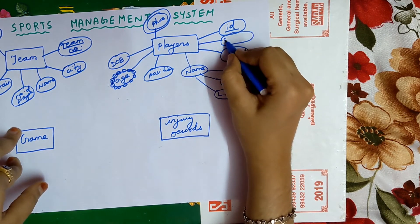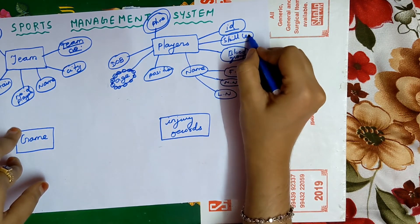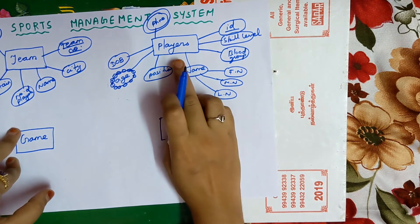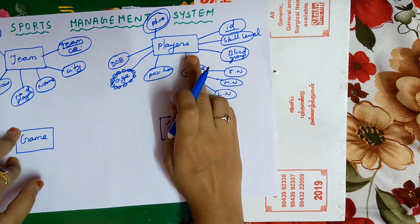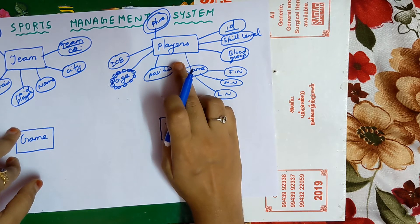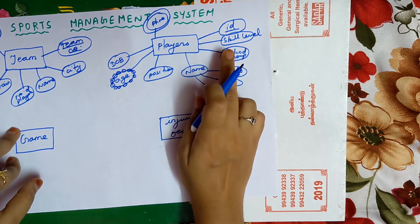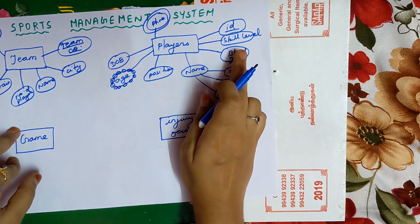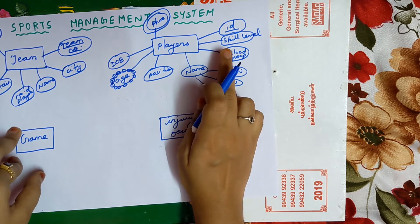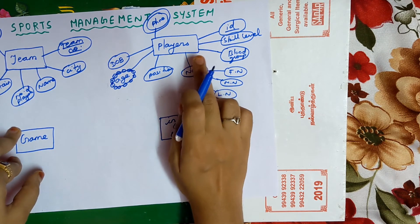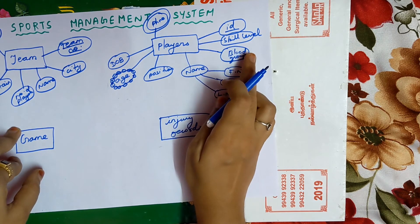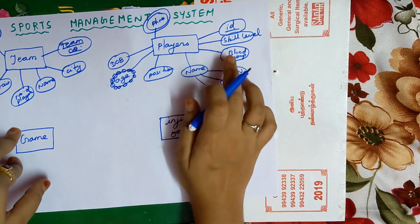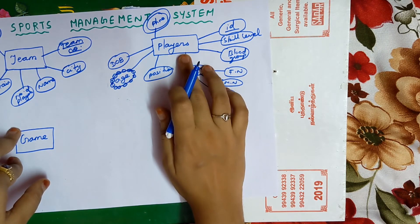The next attribute is skill level. It is very important to know the skill level of a player — when selecting a player for a team, they will check if the player has the particular skill needed for that game. Only then will they select the player. So skill level is a very important attribute. These are all the attributes of the player entity.